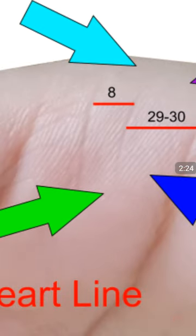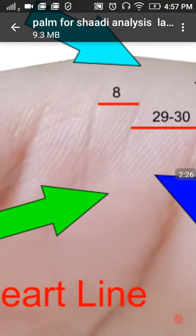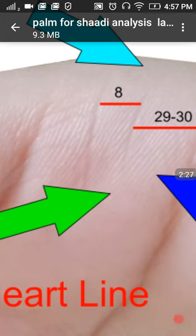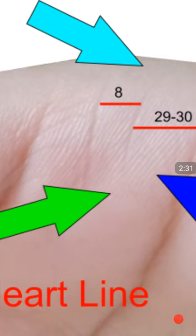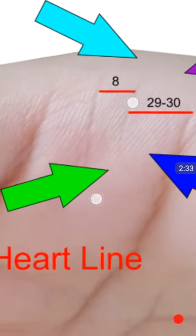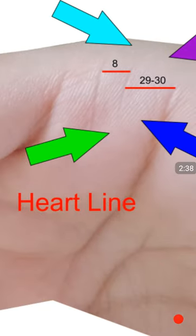But when you see the distance between the two, here the distance between the two will be eight years. So there will be much more chance after eight years she will get married. So she had to wait for eight years to get married.